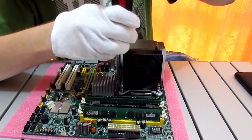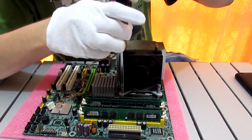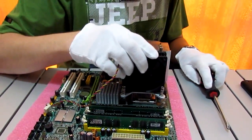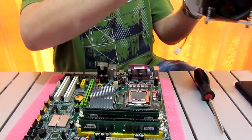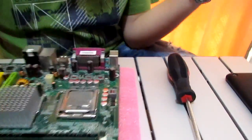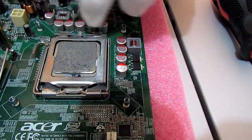So our cooler is now off and we can see what looks like a very dirty CPU. So that's all our old thermal paste, all there.